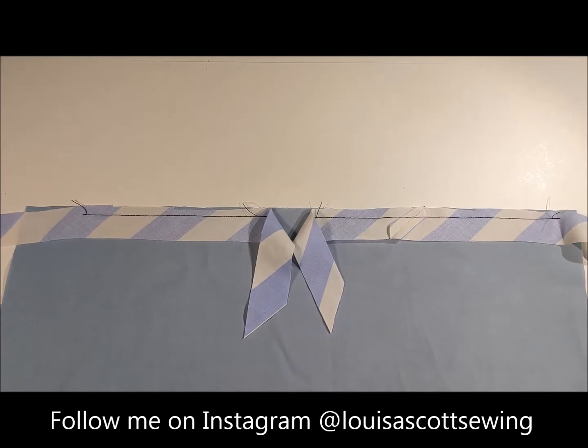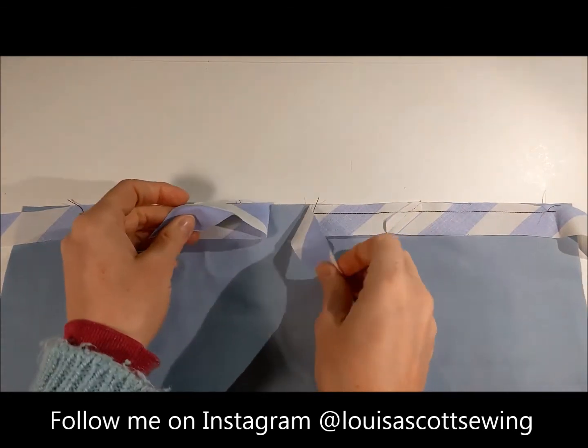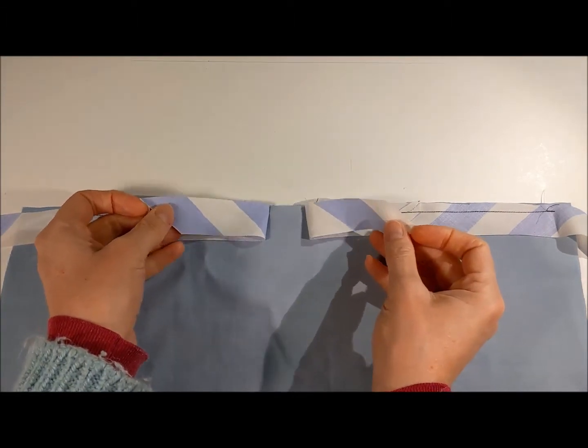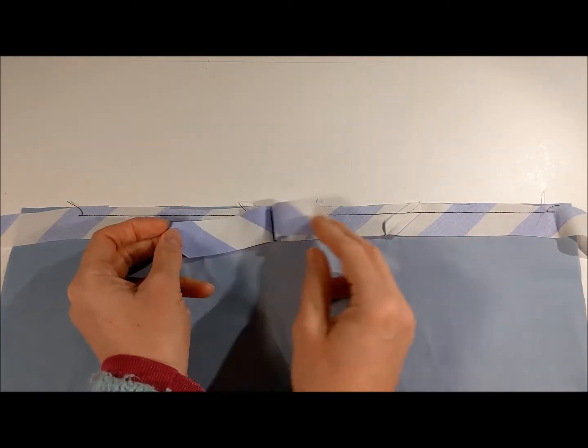I want to now imagine that I've sewn all the way around something and I've come back to the beginning with my bias strips. What do I do now? How do I make it look professional?